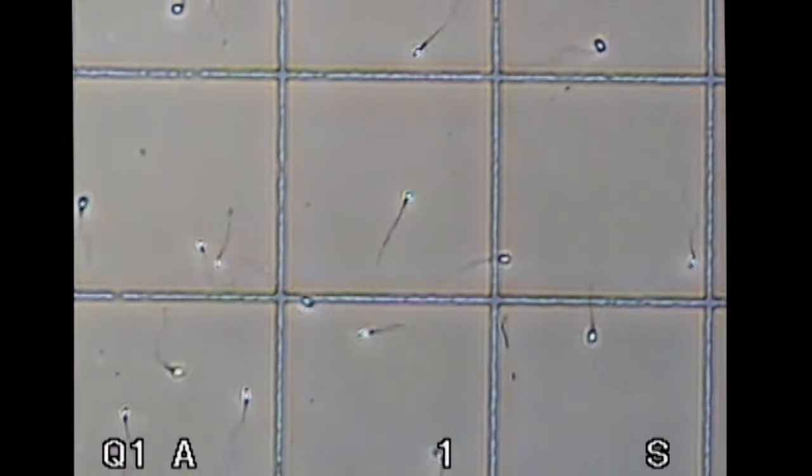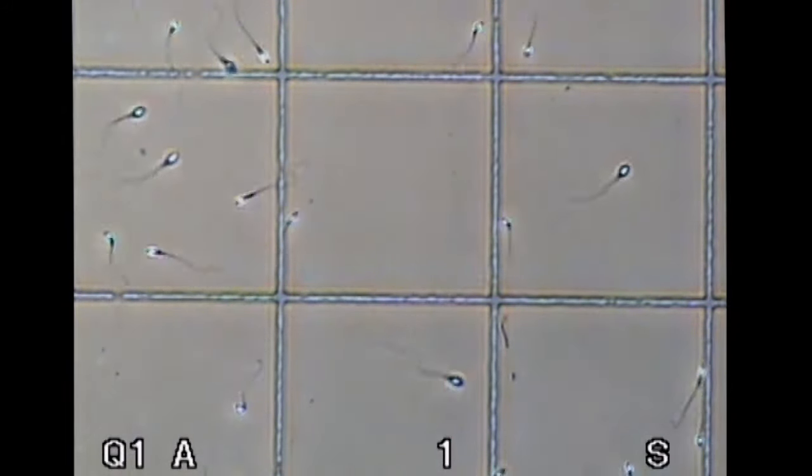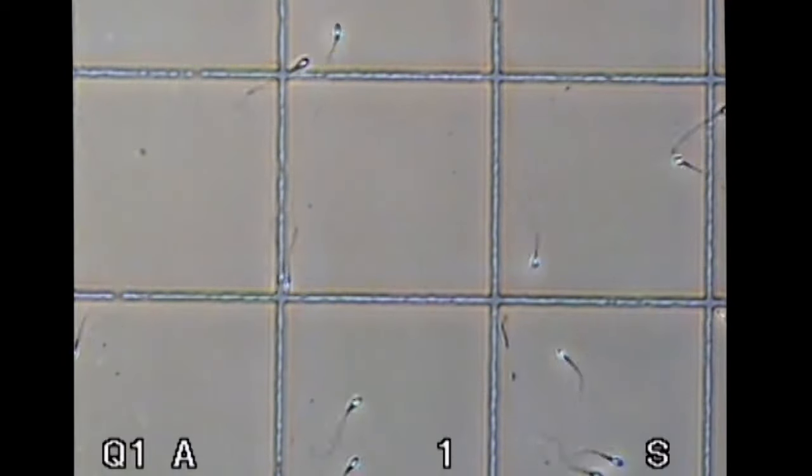Now we can clearly see some details in the sperm cells. This specimen shows a good sperm count and good progressive motility.